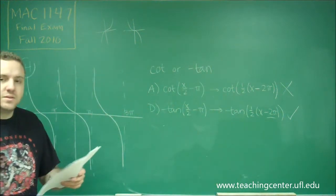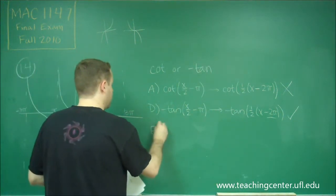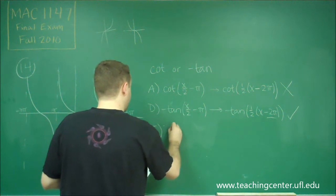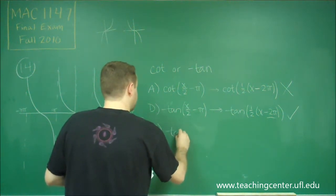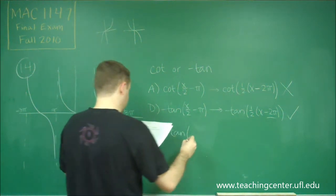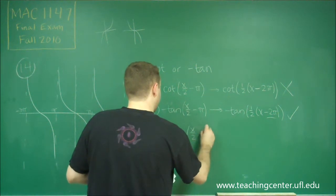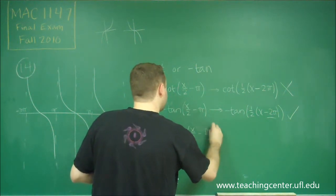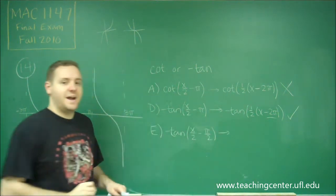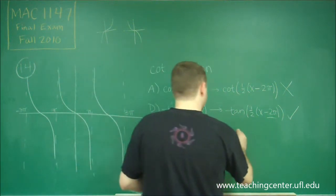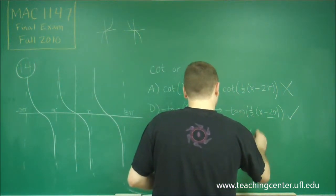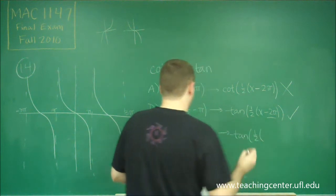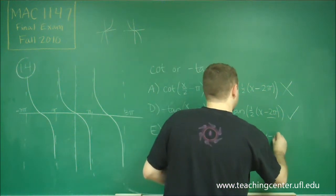Let me just show you why E is also incorrect. For E we have negative tangent of x/2 minus π/2. If we do our factoring, that would give us negative tan of 1/2, we would have x minus π.